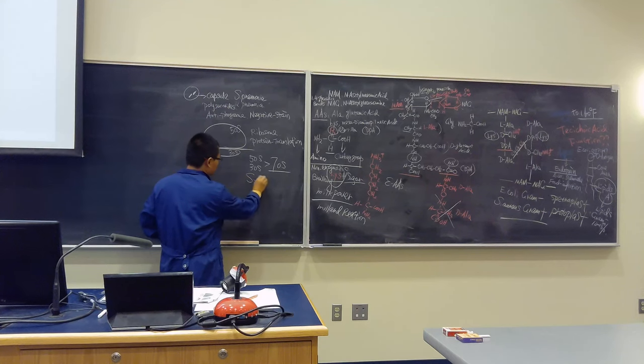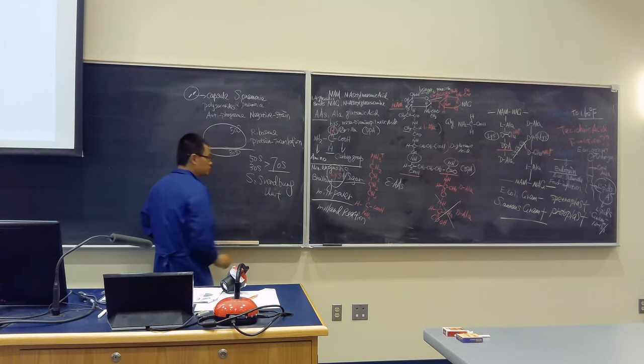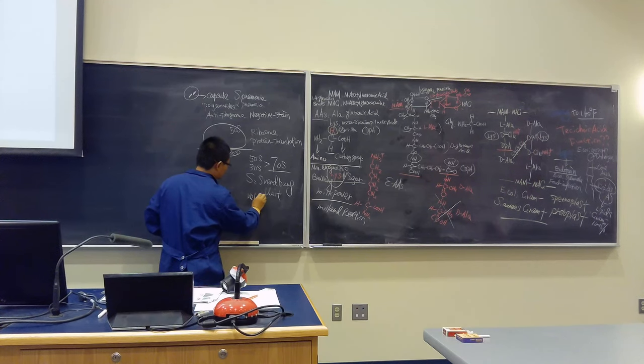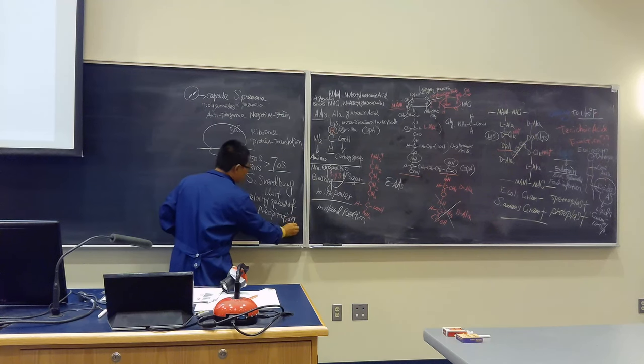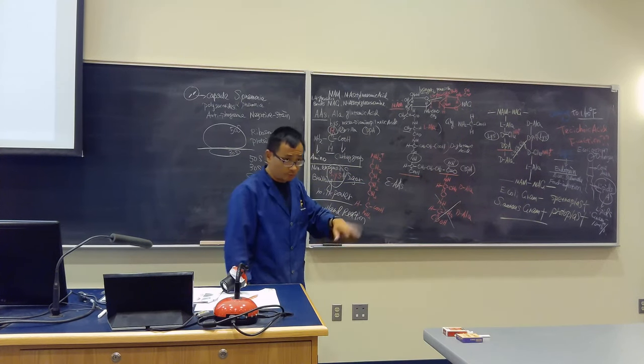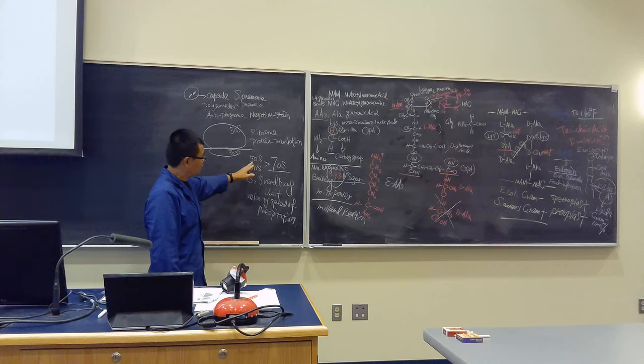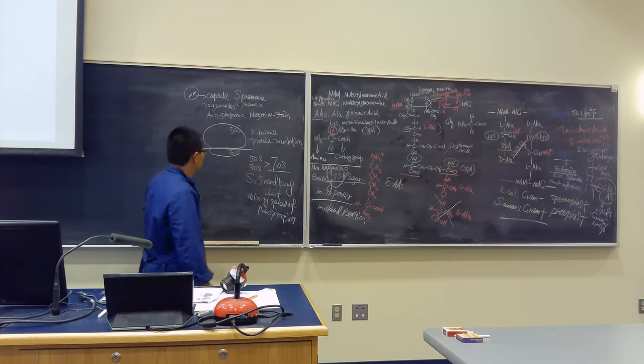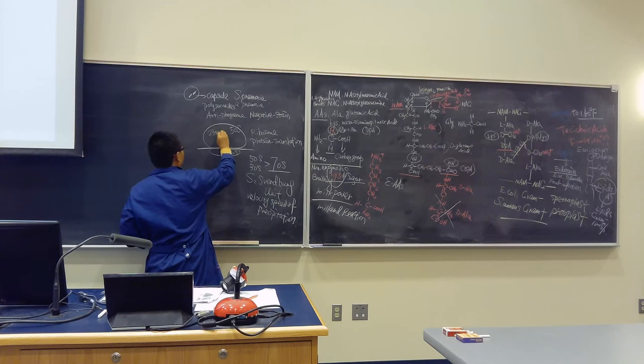Why? Because S is a Svedberg unit. It measures the velocity, or speed, of sedimentation. When you do isolation, you can do high-speed ultracentrifugation. So you see the speed when they concentrate or precipitate at the bottom. Then people can measure that using Svedberg units. That's why it's not a simple addition. It's 50S, 30S. The whole unit is 70S. The subunits inside the 50S are 23S and 5S rRNA.